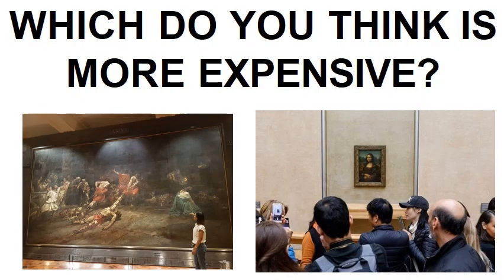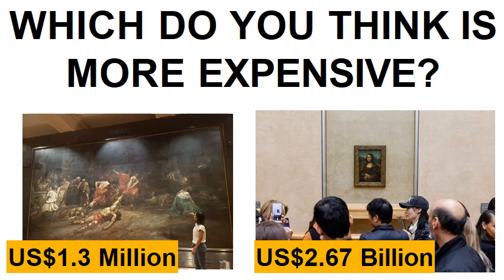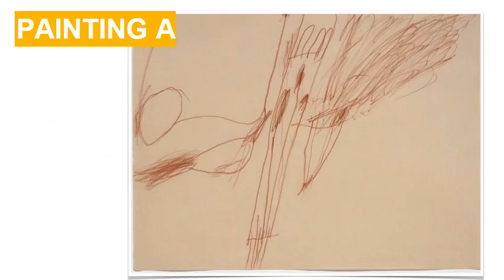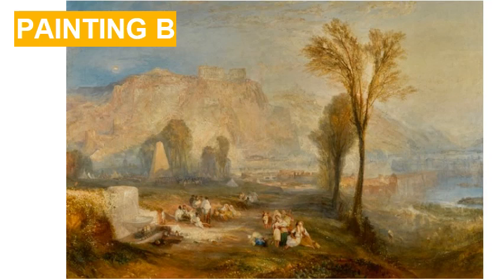Which do you think is more expensive — the Spolyarium or the Mona Lisa? I'll give you five seconds. Now, the answer relates to its size and price. So, let's look at painting A — it looks like it was scribbled with a red ballpen on a panel. And painting B — look at the details the artist put there. They are side by side. Which do you think is more expensive — painting A, the one that looks like scribbles on a wall, or painting B, which is fully detailed and with colors?